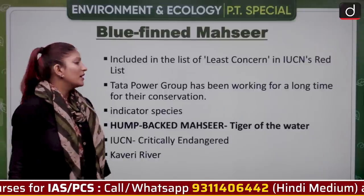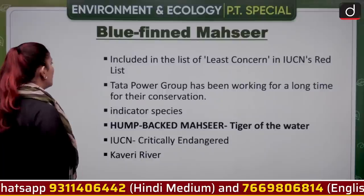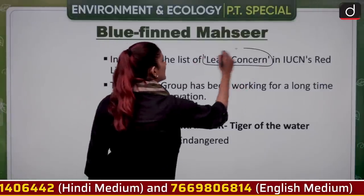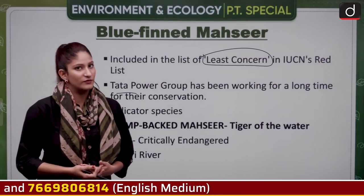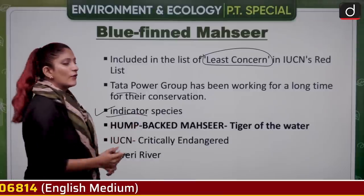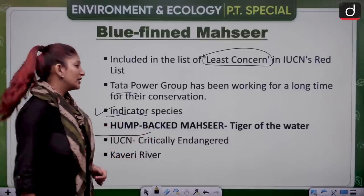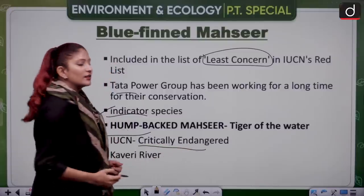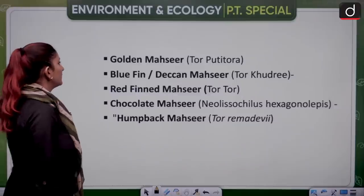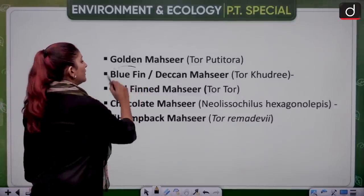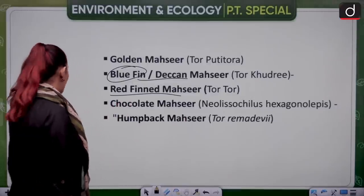The bluefin mahseer is a fish with blue fins included in the 'least concern' category on the IUCN Red List. The Tata Power group has been working to conserve it, and it is also an indicator species. Humpback mahseer are known as the 'tiger of the river' or 'tiger of the water' — their IUCN status is critically endangered and they are found in the Kaveri River. Other mahseer species include golden mahseer, deccan mahseer, redfin mahseer, and chocolate mahseer.